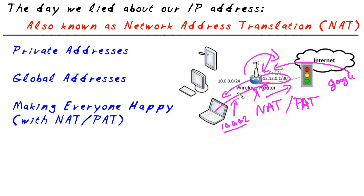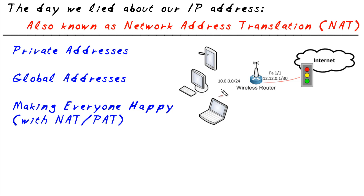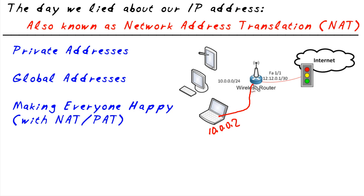Network address translation is when we do a one-to-one mapping — each client on the outside would get their own IP address. But in most cases we don't have three global addresses for three individual clients. So instead we overload on a single address — that's called PAT, port address translation — and this device tracks all the sessions. To capture all the traffic, I have the client at 10.0.0.2 wired into this router, and we're going to capture traffic before and after NAT so we can see the pre-NAT address and post-NAT address.